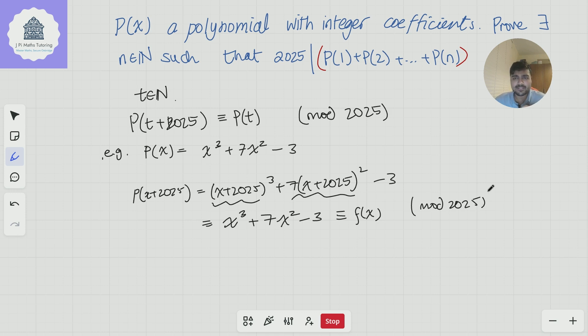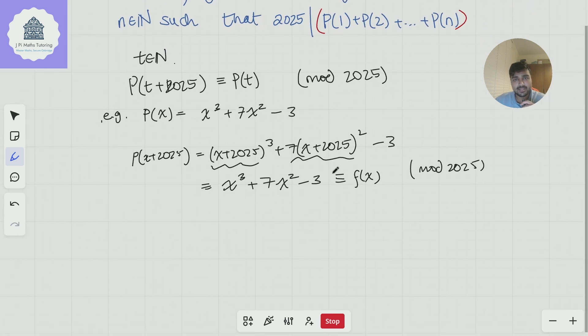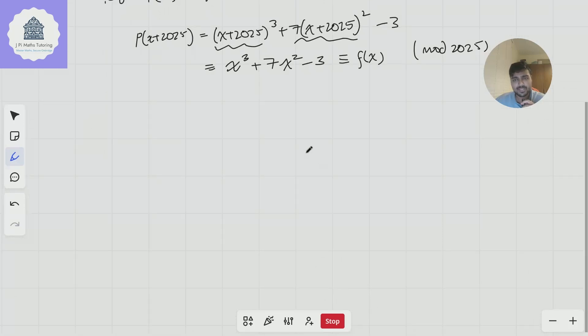Cool. So we're going to use that fact to help. So in a way, if we look mod 2025, this polynomial is periodic. And that's going to be the crucial fact we'll use to prove this result here. Okay, so let me just scroll down, give myself some more space.